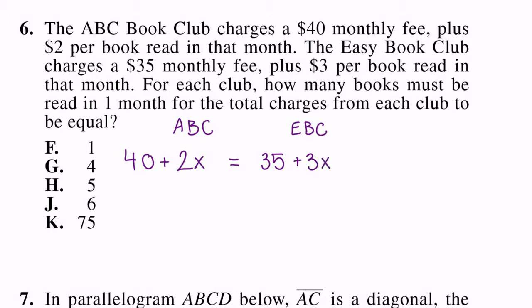Now all we have to do is solve for X. So we can do that by subtracting both sides by 35. So we get 5 + 2X = 3X. We can subtract 2X, subtract 2X. We get 5 = X. So we know that the charges will be equal when an individual reads 5 books. So our answer is H, 5.